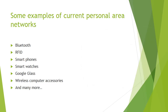Some examples of current personal area networks — and these are all wireless features: Bluetooth, RFID, smartphones, smartwatches, Google Glass, which is a newer one, and wireless computer accessories. And these aren't just the current ones; there are many more that we could talk about as well.